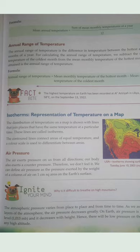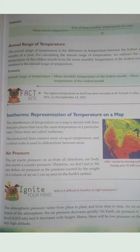Air pressure — the air exerts pressure on all of us from all directions, and our body exerts a counter pressure. The blood inside our body also exerts pressure, so the pressure exerted by the column of air in the atmosphere is not felt by us. Air pressure is defined as the pressure exerted by the weight of a column of air on one centimetre square area on the earth's surface.